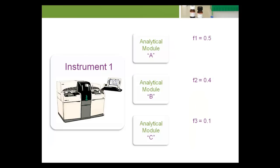As a second example, assume the lab has three modules that test glucose, with two performing the majority of patient testing, F1 equals 0.5, F2 equals 0.4, and the third module used less frequently, F3 equals 0.1.